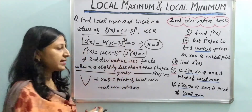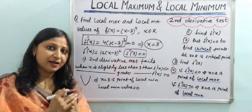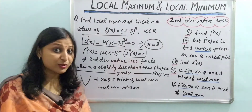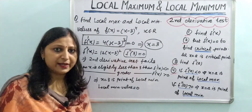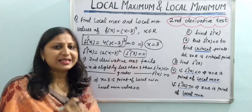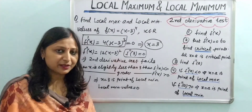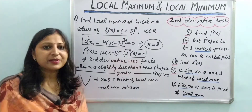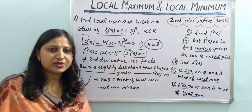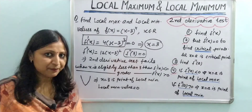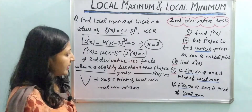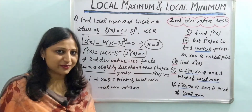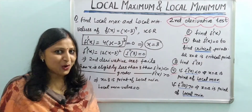So the disadvantage of the second derivative test is that when the second derivative value at a critical point is zero, it cannot give us the result. In that case, we have to take help of the first derivative test. The advantage of the first derivative test is that it never fails in any situation.